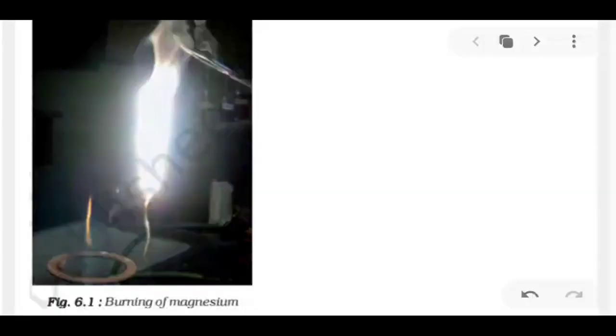Hello students, once again we are here to continue the topic combustion and flame. Now we have learned earlier what is combustion. The chemical process in which a substance reacts with oxygen to give off heat is called combustion. And what is heat? In this diagram, what is happening behind it is heat.